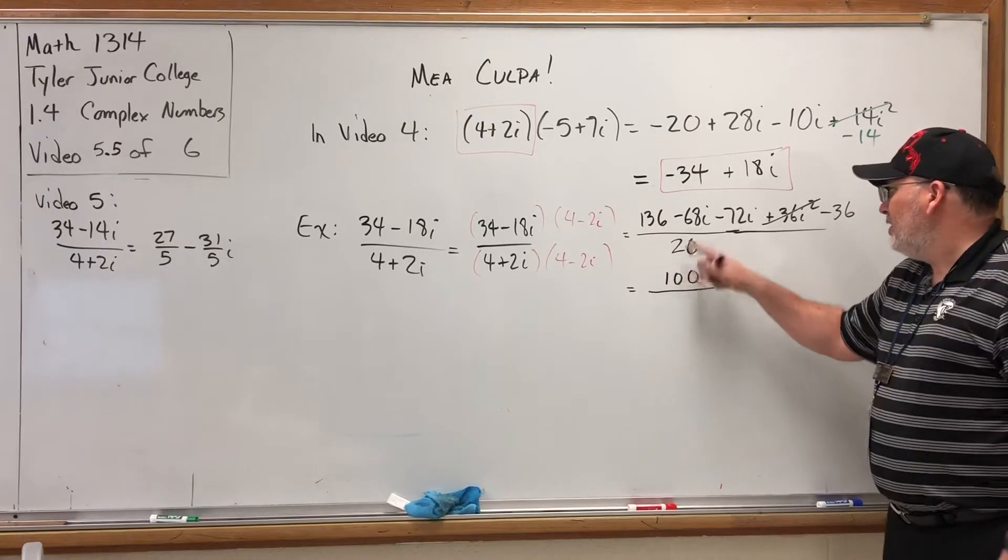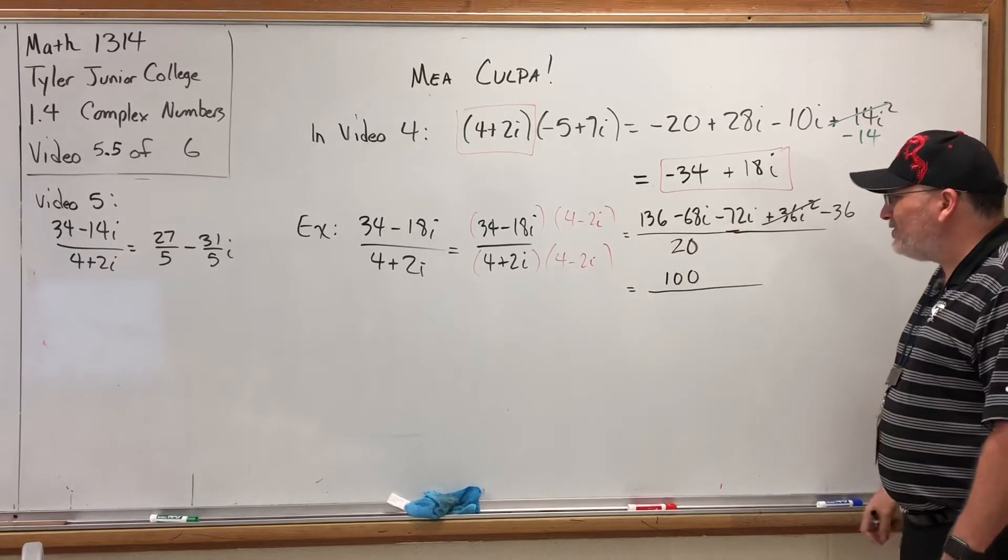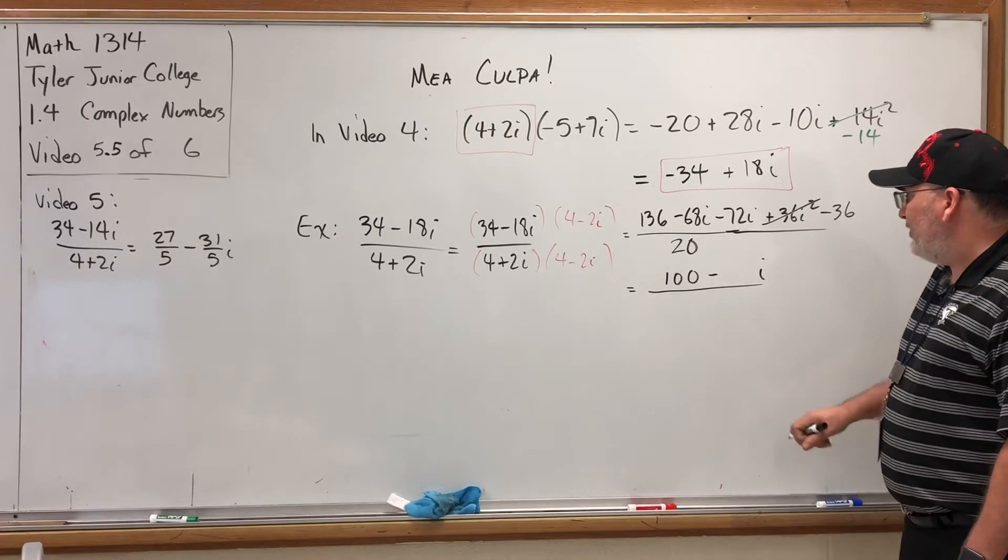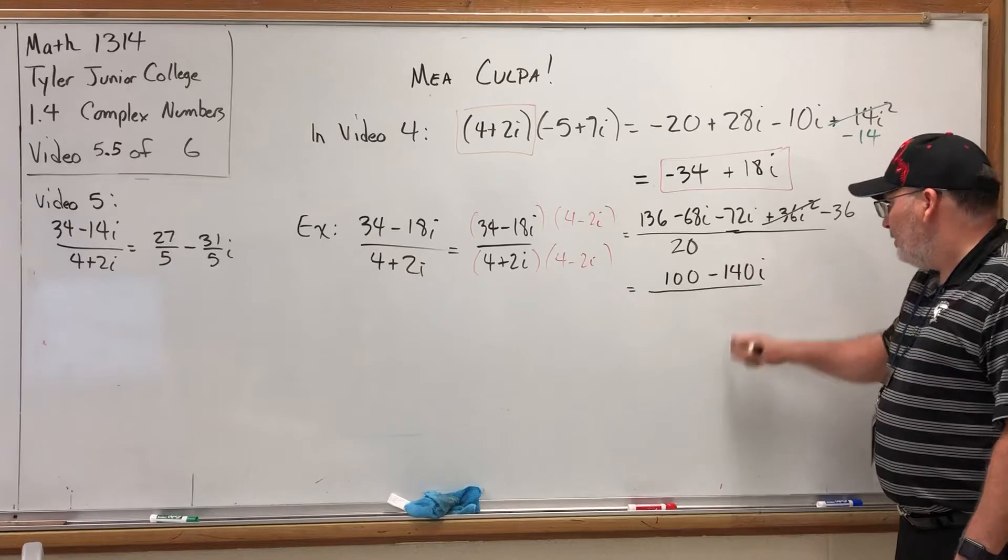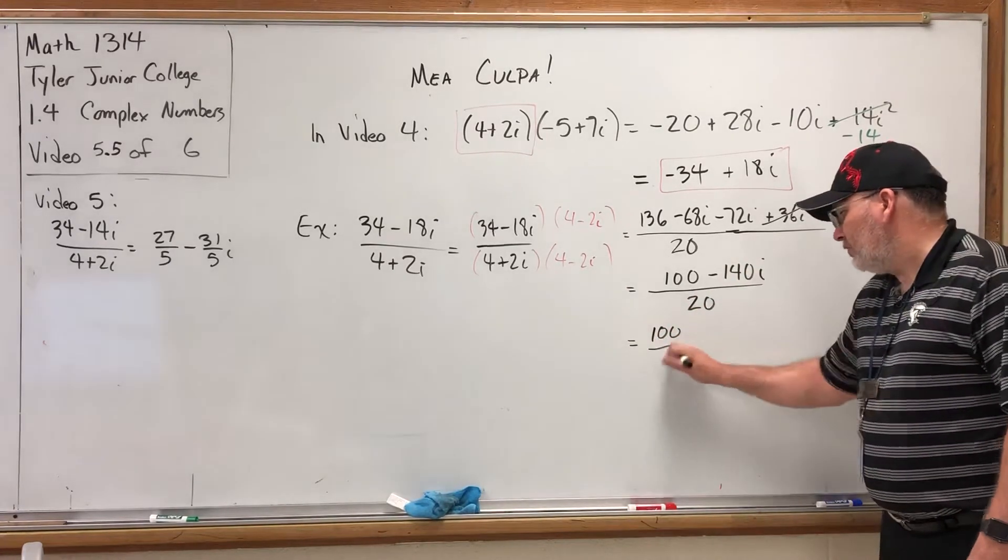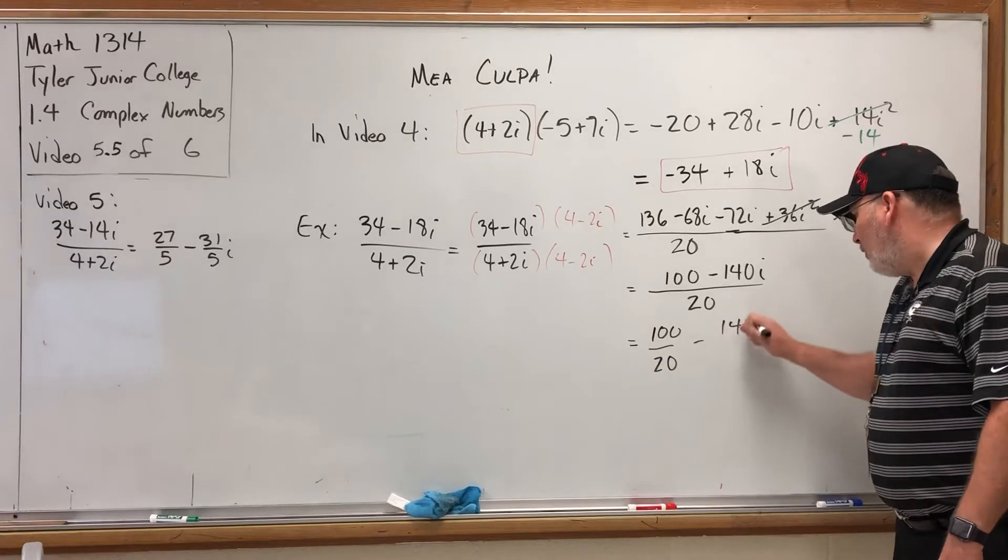So 34 times 4 is 136. Combine the real parts: 136 - 36 is 100. Combine the imaginary parts: -68i - 72i is -140i; 68 and 72 is 140. All this is over 20.